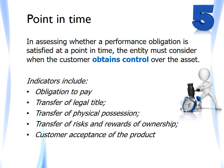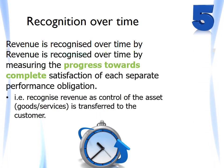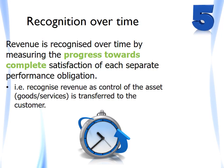If the response to those three questions is no, then revenue should be recognised at a point in time, and it is necessary to determine at what point control of the good or service is transferred to the customer. Indicators in the standard include risks and rewards — note how this is now only one factor to be considered, somewhat different to today where it is the primary indicator for the sale of goods. Once an entity has determined that revenue should be recognised over time, revenue is recognised by measuring progress towards complete satisfaction of each separate performance obligation, using input or output methods.